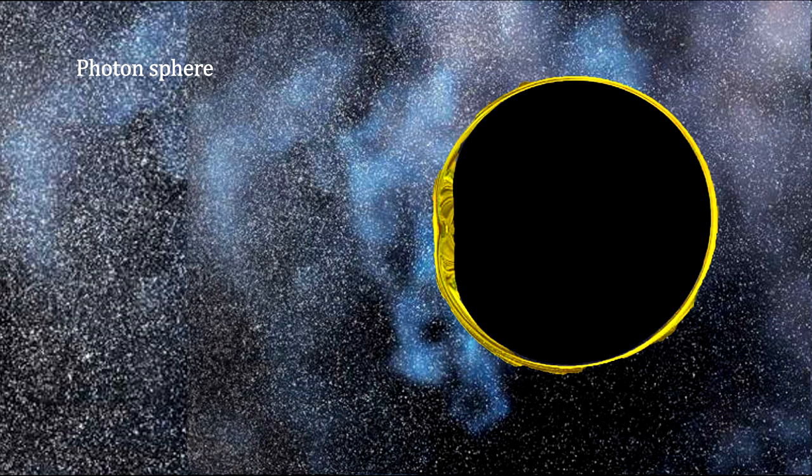For a rapidly rotating black hole, the orbital volume around the black hole would be significant. This would produce a photon sphere shell encasing the black hole.